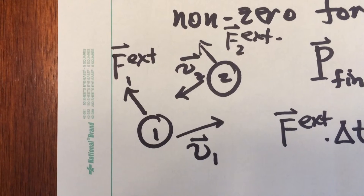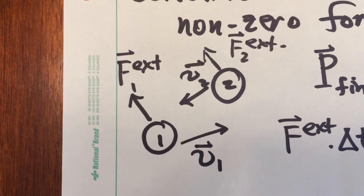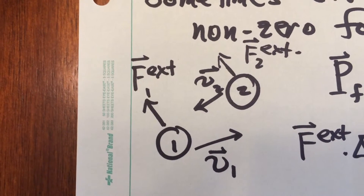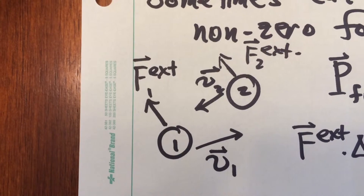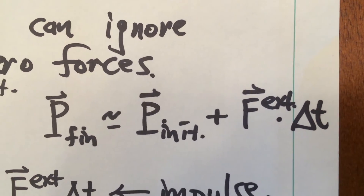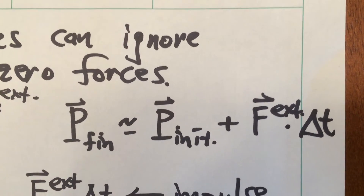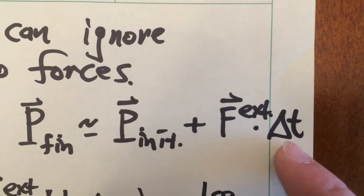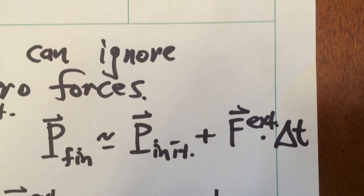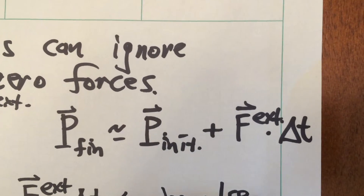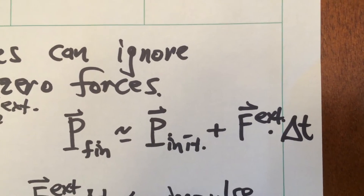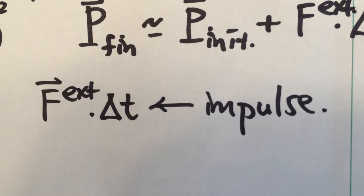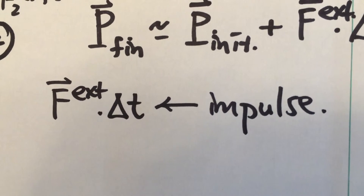There are other useful simplifications we can apply. Consider two particles with initial velocity vectors, and now think about the external forces on the system. Those external forces don't have to be zero for us to apply a conservation of momentum argument. If they are non-zero, the final momentum will be approximately equal to the initial momentum plus a small change — the sum of all external forces times a short time delta t. So if the interaction between particles one and two occurs over a short time delta t, we can approximate the change in momentum using this expression. This is called the impulse approximation, where f-external times delta t is a small correction to the conservation of momentum argument.